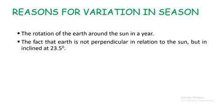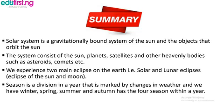Summary: the solar system is a gravitationally bound system of the Sun and the objects that orbit the Sun. The system consists of the Sun, the planets, the satellites, and other heavenly bodies such as asteroids and comets. We experience two main types of eclipse — solar and lunar. A season is a division of the year marked by changes in weather; we have winter, spring, summer, and autumn as the four seasons within each year.